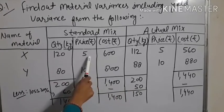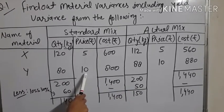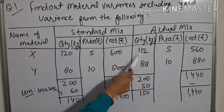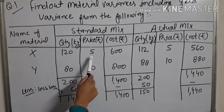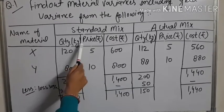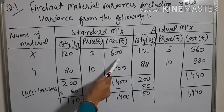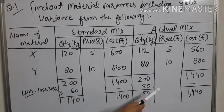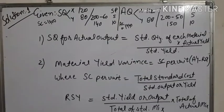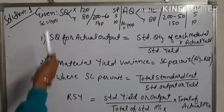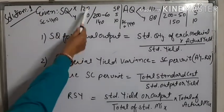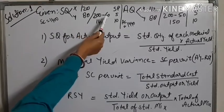Here are standard price for X and standard price for Y. Actual price for X and actual price for Y. These are the costs — the product of quantity and price gives the cost, then its total and actual cost. As per the given question, standard quantity for X and Y is 120 and 80, total is 200 with the loss.